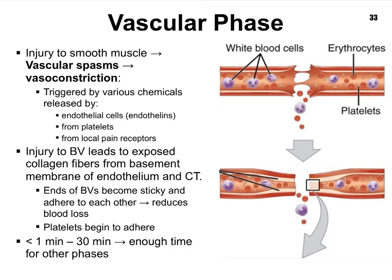Injury to our blood vessels also leads to exposed collagen fibers. Remember that the basement membrane of the simple squamous epithelium — called the endothelium of blood vessels — has collagen fibers that will now become exposed. This makes the ends of the blood vessels rather sticky. So not only are we vasoconstricting, the ends of our blood vessels also become sticky, almost trying to glue together, again making it difficult for blood to escape.